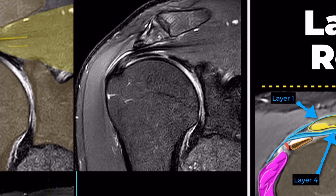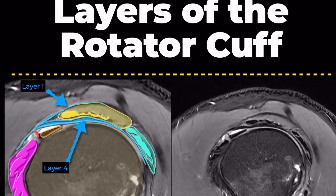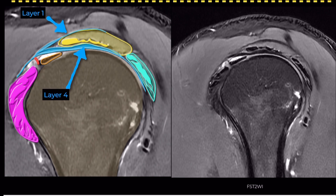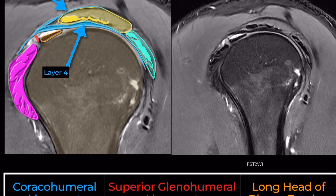On sagittal images, the coracohumeral ligament has two extensions which are best visualized. Layer 1 — Superficial Limb: this courses along the bursal surface.